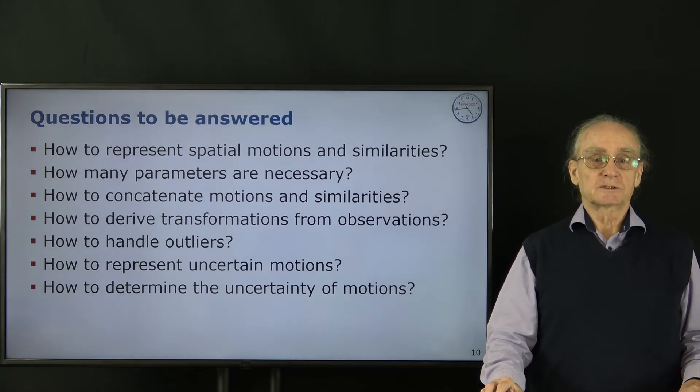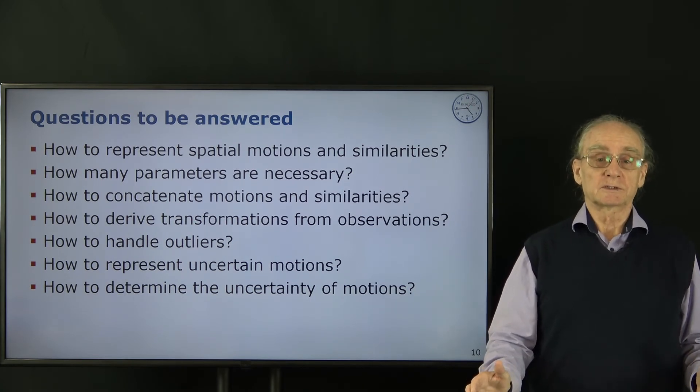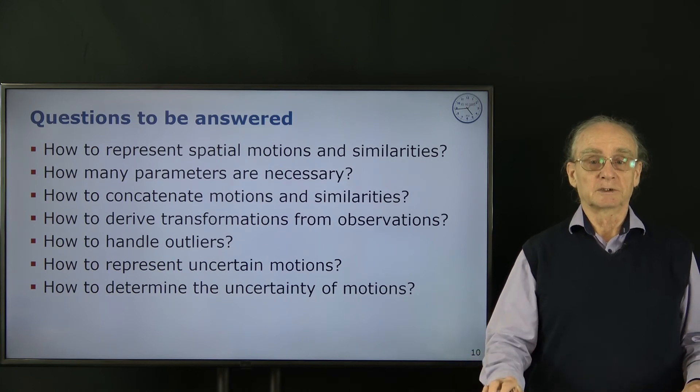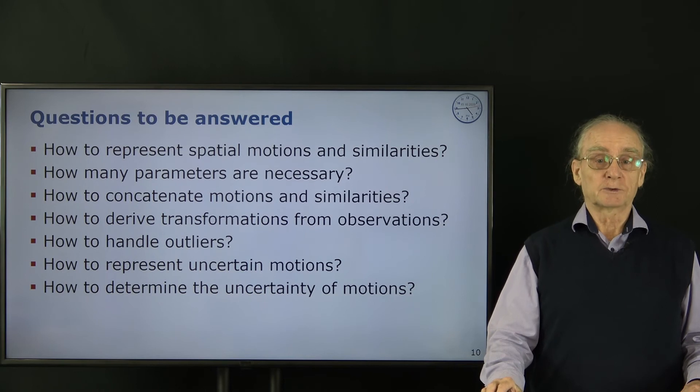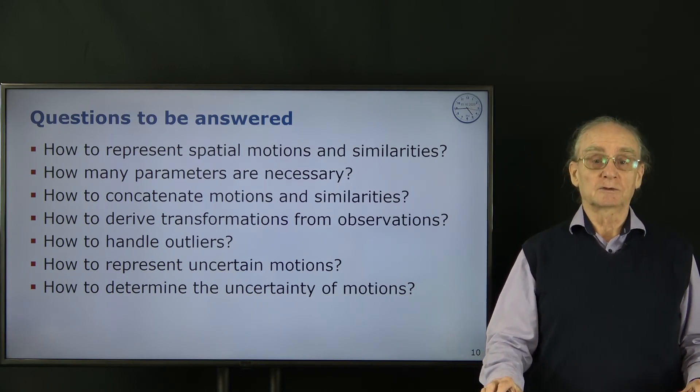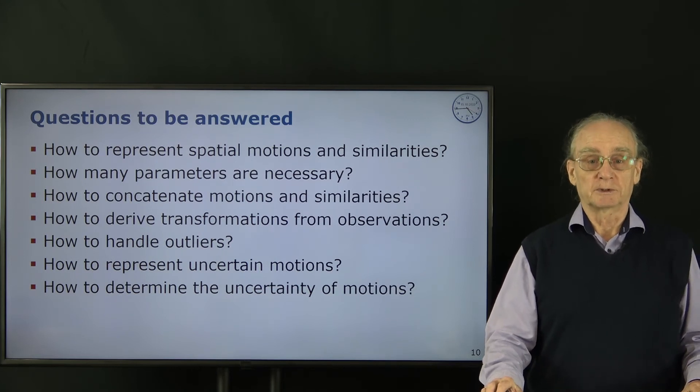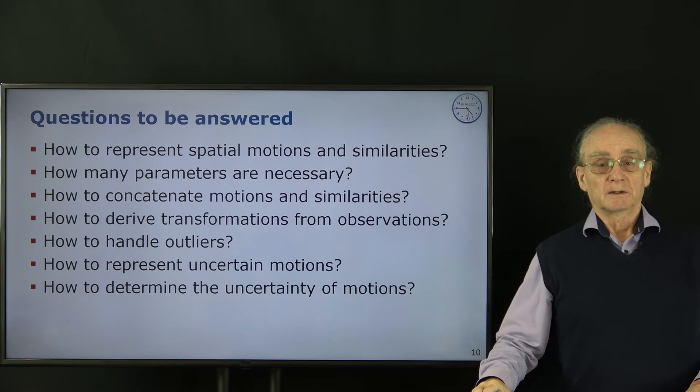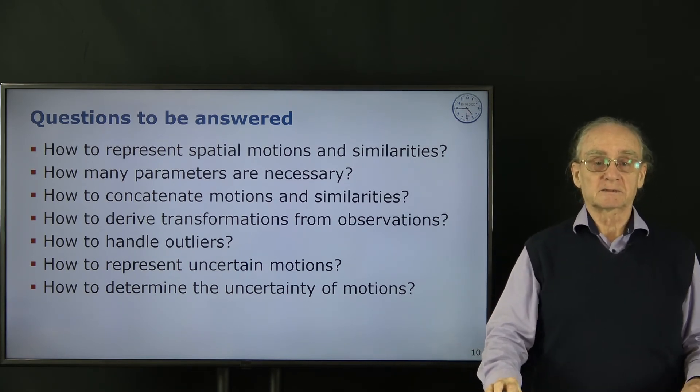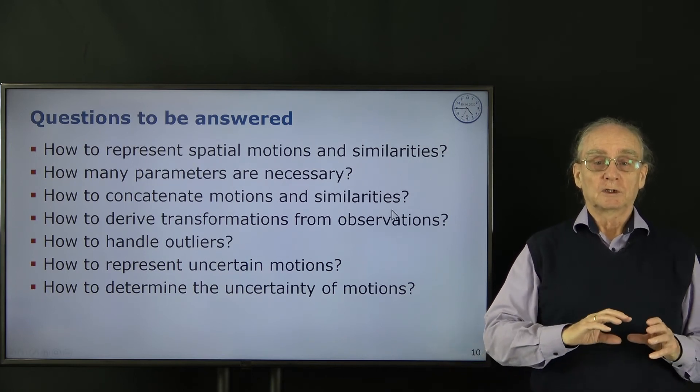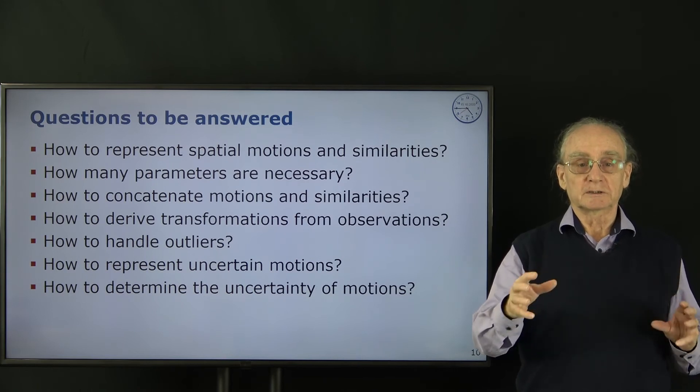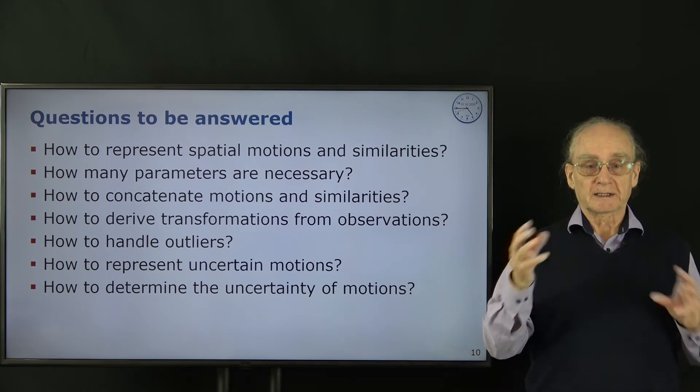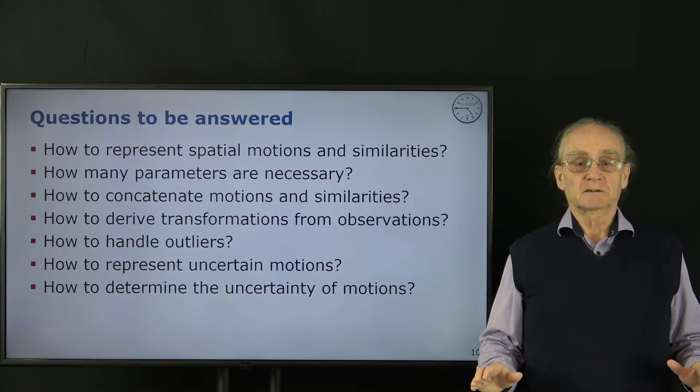What types of questions do we want to answer? First, we want to discuss how to represent spatial motions and similarities. How can we do this using our knowledge in basic mathematics? How many parameters are necessary? If we don't know how many parameters are necessary, we can't do any estimation. So we need to know the minimum number of parameters. For instance, we could think of a motion in 3D as a translation and a rotation - we would guess that would be 6 parameters. Now let's assume we have a motion over time and we measure the relative motion between different times. We want to concatenate these motions or similarities. The question is can we do this easily?